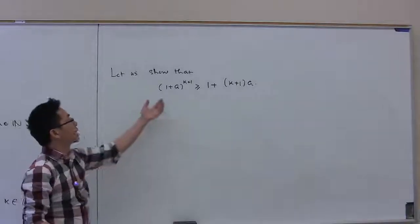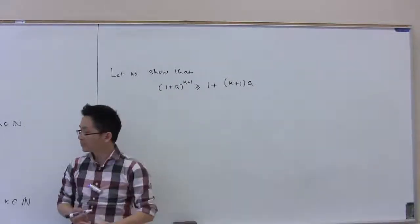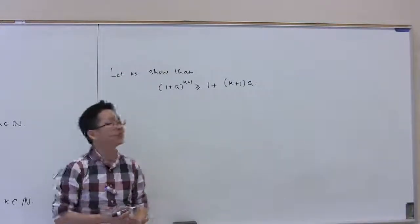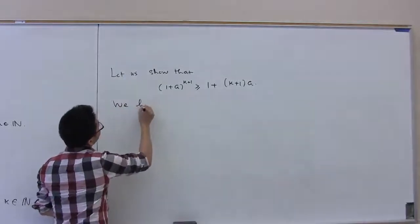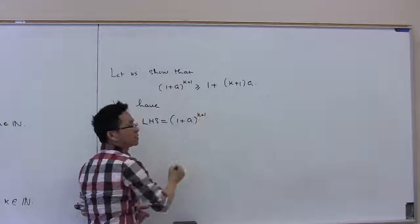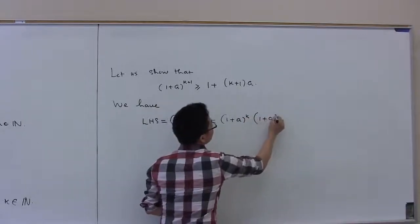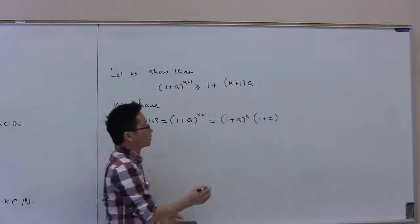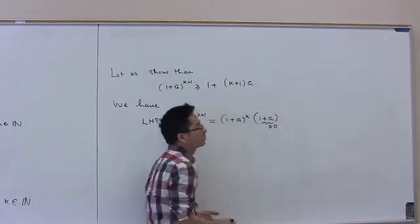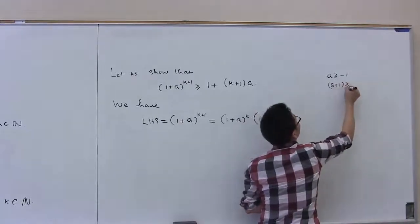We will try to show that the left-hand side is greater than or equal to the right-hand side, using the inductive hypothesis: (1+a)^k ≥ 1+ka. The left-hand side (1+a)^(k+1) can be written as (1+a)^k times (1+a). Since a is greater than or equal to minus 1, (1+a) is greater than or equal to 0. This is a very important hypothesis.